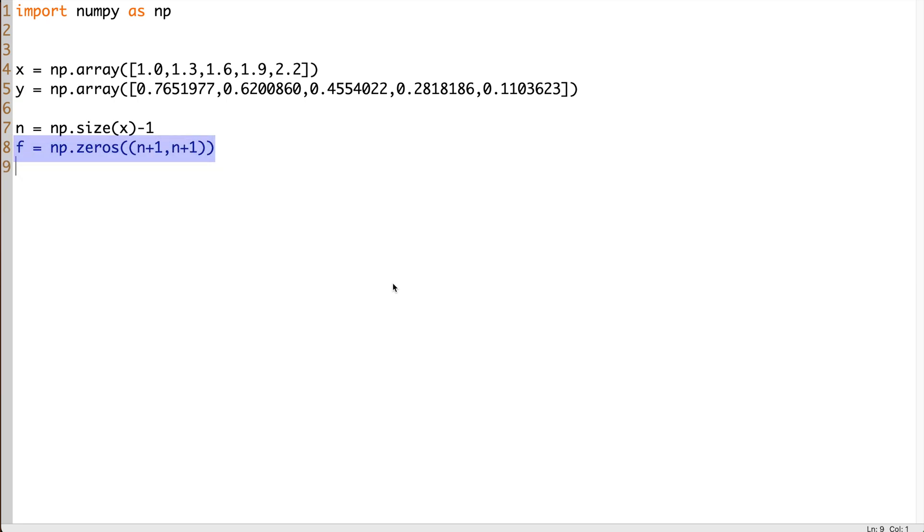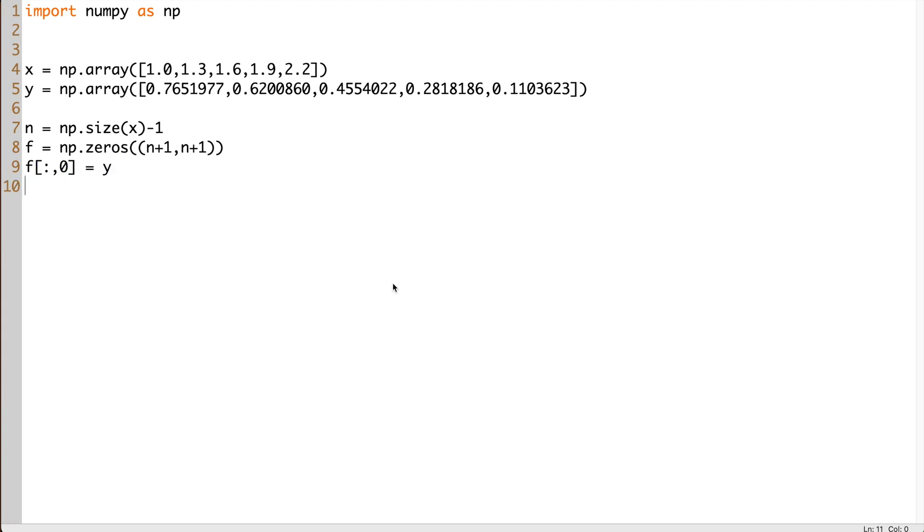n is the degree of the polynomial. In this line, I initially define f as a square matrix of zeros. You can also define it as an empty matrix. However, NumPy's empty function can fill the array with random numbers, which could be confusing when printed. In this step, the column 0 is filled with the f or y values from the table.